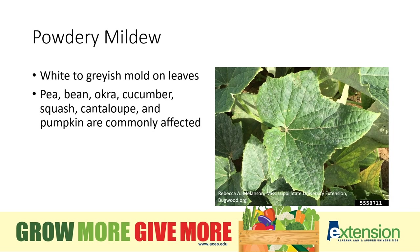Now let's talk about some of the common diseases you might encounter in the garden. One of the most common is powdery mildew, and it's easily recognized by the white to grayish powdery coating on the leaves. It almost looks like talcum powder has been sprinkled on the leaves. You'll see this on a wide variety of plants — you might see it on your peas, your cucumbers, your cantaloupes, your watermelons. A large variety of plants can be affected.